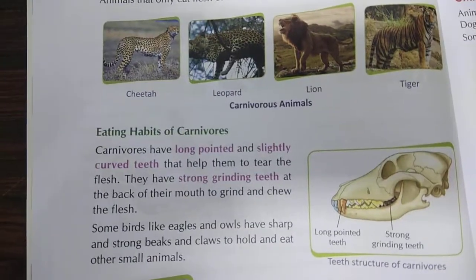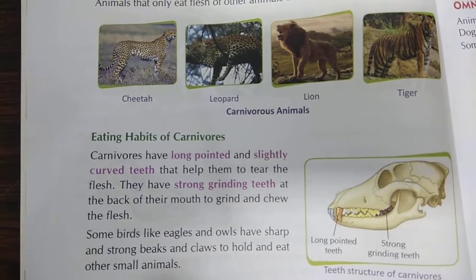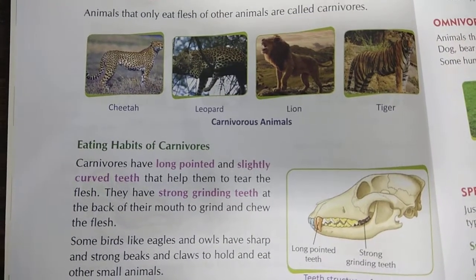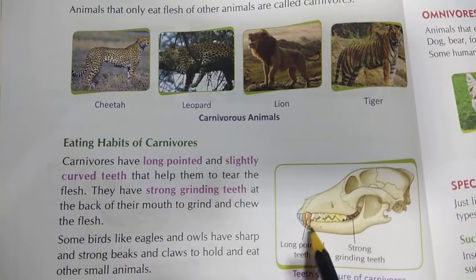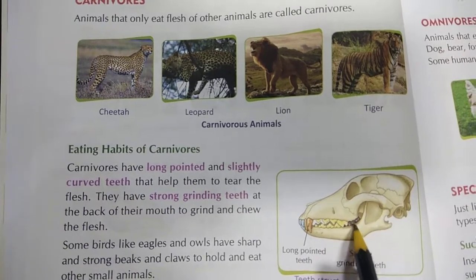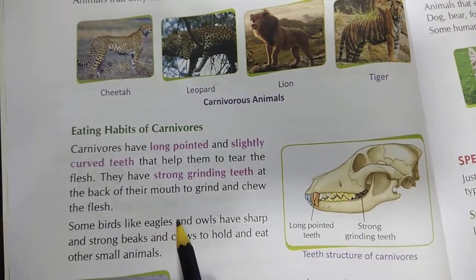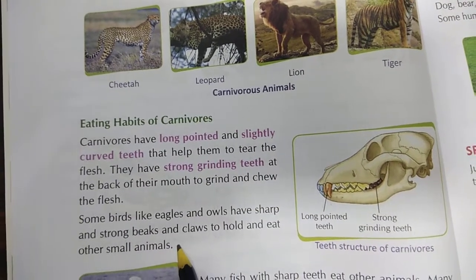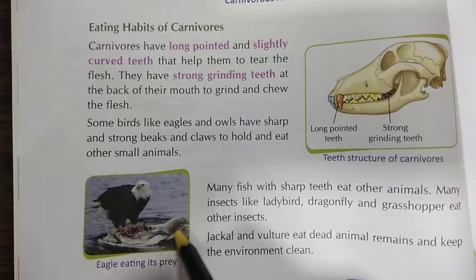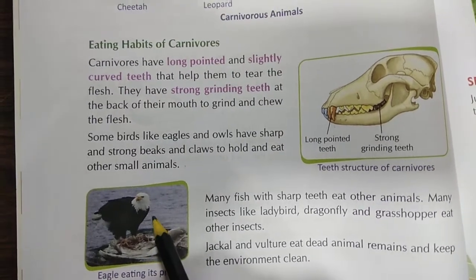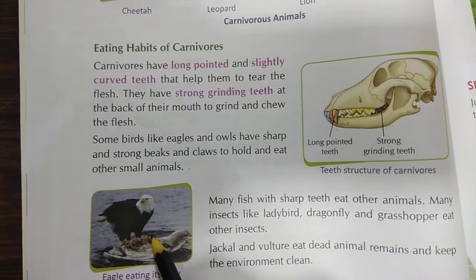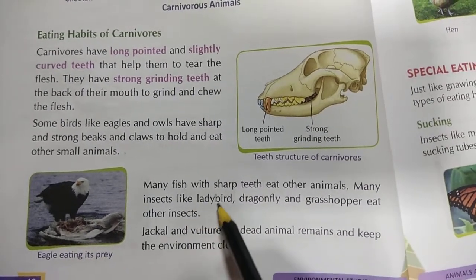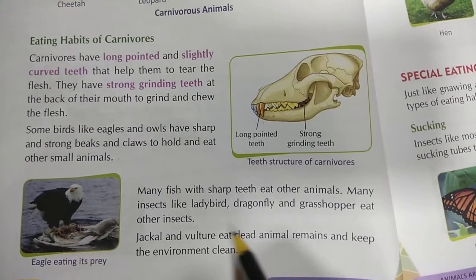Eating habits of carnivores: carnivores have long, pointed and slightly curved teeth that help them to tear the flesh. They have strong grinding teeth at the back of their mouth to grind and chew the flesh. Some birds like eagles and owls have sharp and strong beaks and claws to hold and eat other small animals. Many fish with sharp teeth eat other animals.